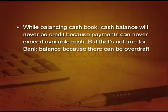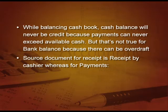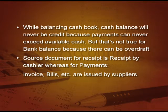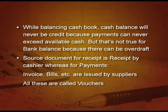While balancing the cash book, the cash balance will never be credit, because payments can never exceed the available cash. But that is not true for bank balance, because there can be overdraft. What are the source documents for receipts and payments? The source document for receipt is the receipt issued by the cashier. Whereas for payments, we have invoices, bills, etc., issued by the suppliers. All these are called vouchers.